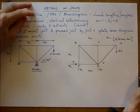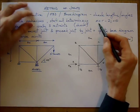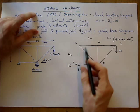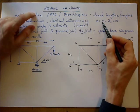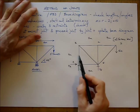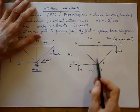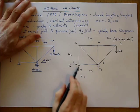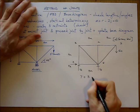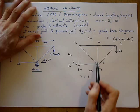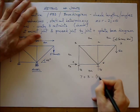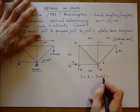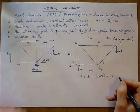Check for statical determinacy. The way we're going to do that is by using the little formula M plus R minus 2J equals 0. M members are restraint forces, J joints. So let's have a look here. We have one, two, three, four, five, six, seven members. One, two, three restraint forces. And the number of joints. One, two, three, four, five, minus 2 times 5. And that equals seven plus three is ten. Two times five is ten. Equals zero. So it's statically determinate.